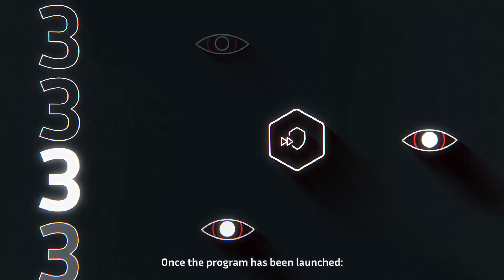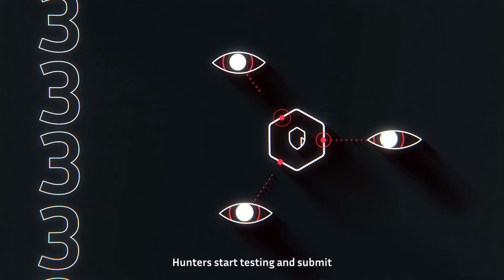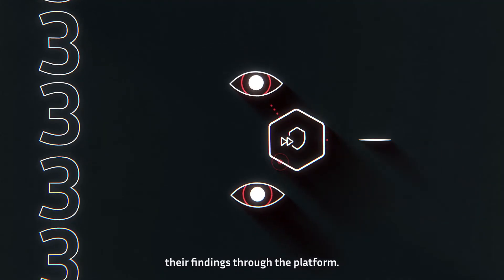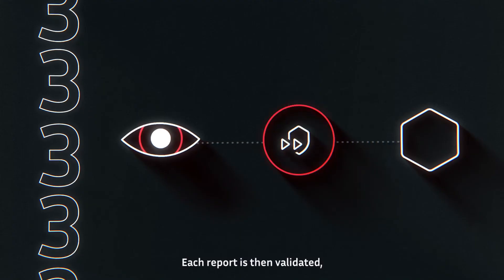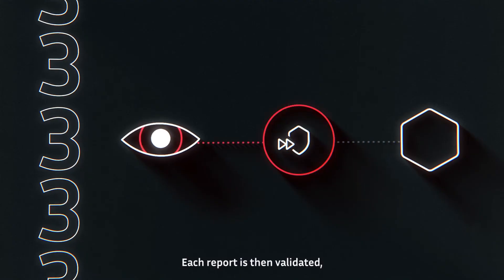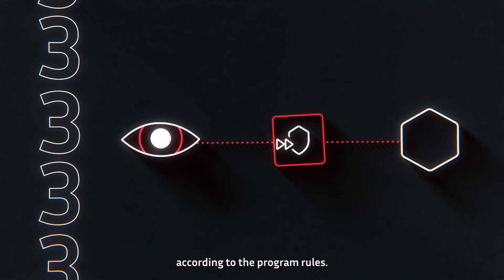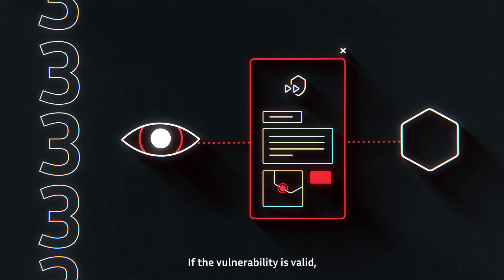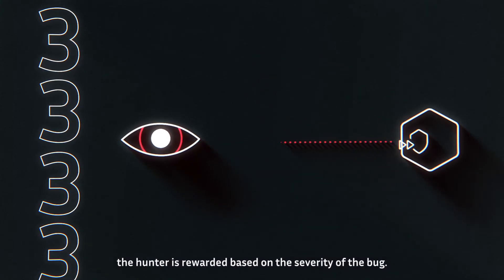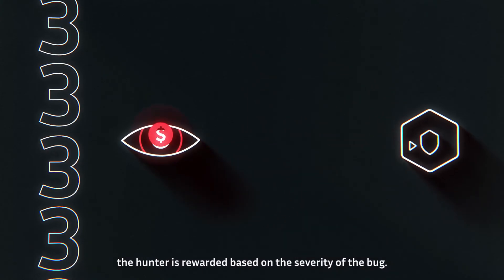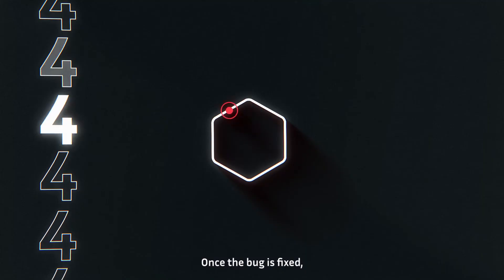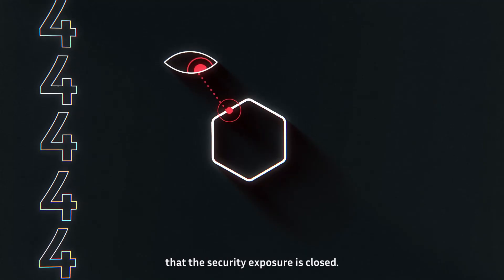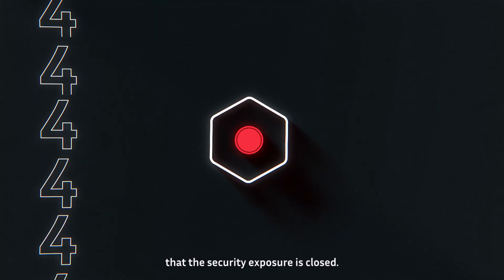Once the programme has been launched, hunters start testing and submit their findings through the platform. Each report is then validated according to the programme rules. If the vulnerability is valid, the hunter is rewarded based on the severity of the bug. Once the bug is fixed, the hunter double checks that the security exposure is closed.